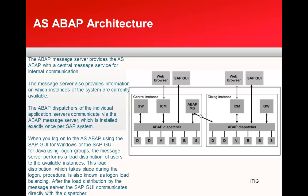The ABAP dispatchers of individual application servers communicate via the message server. When you log on to the ABAP system using SAP GUI for Windows or SAP GUI for Java through logon groups, the message server performs load distribution of users. From the SAP GUI client installed on each user's PC, you connect to the message server, which evaluates the load and sends the connection to a dispatcher, which in turn assigns you a respective work process.